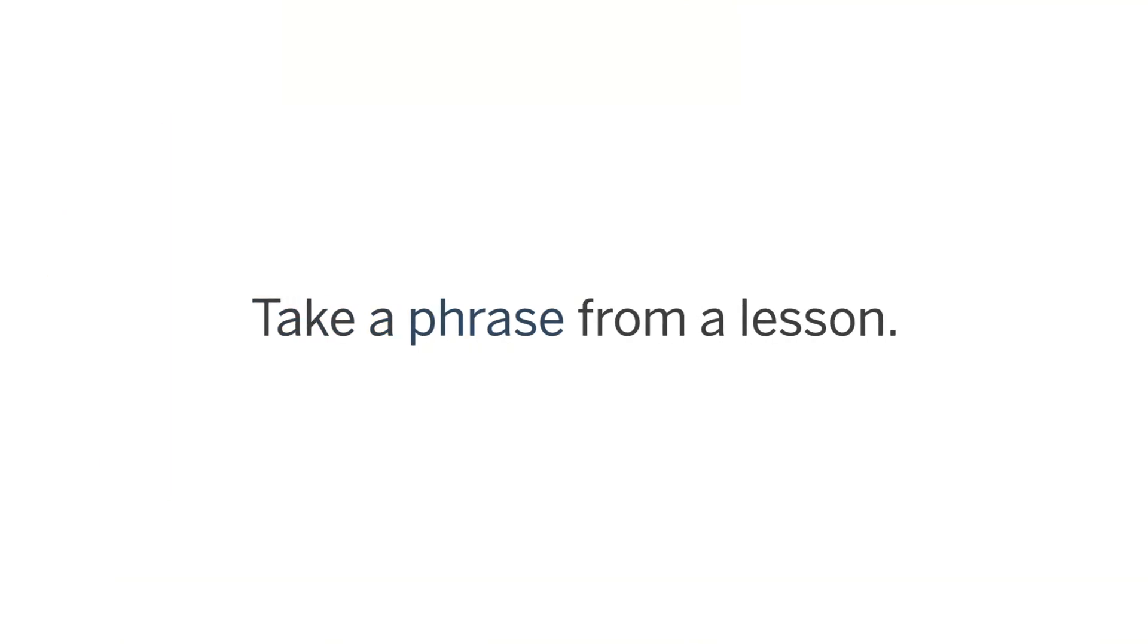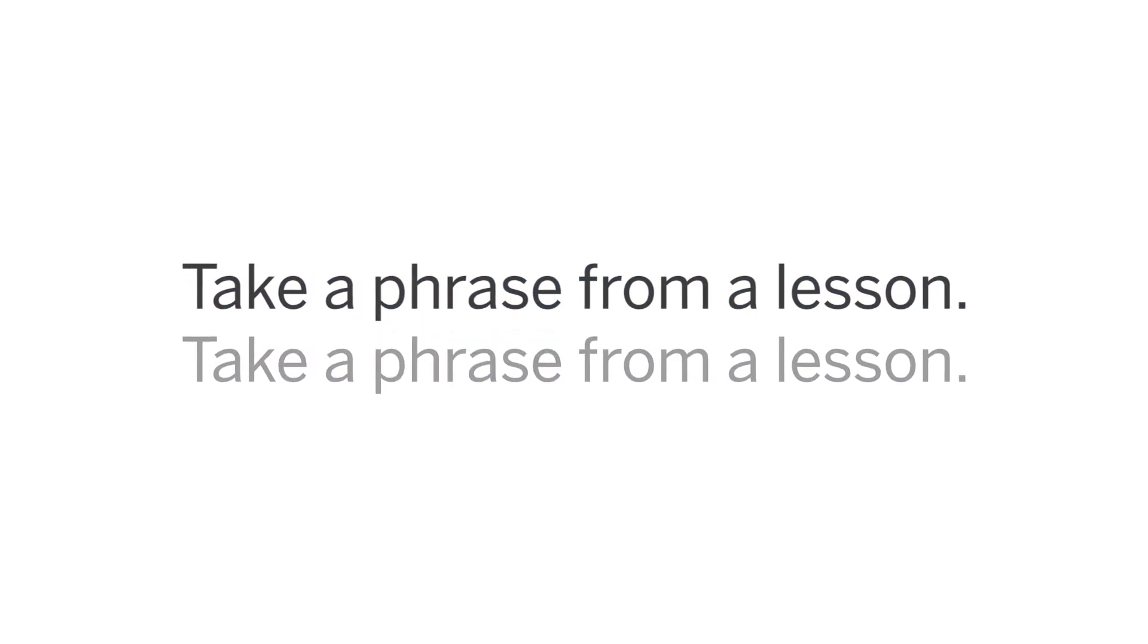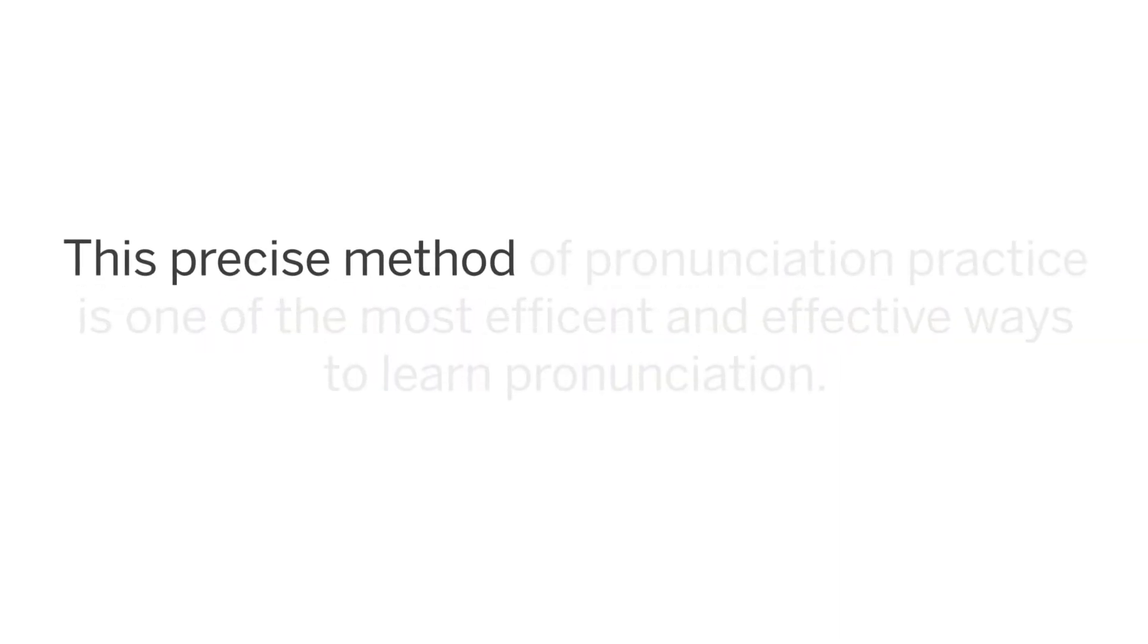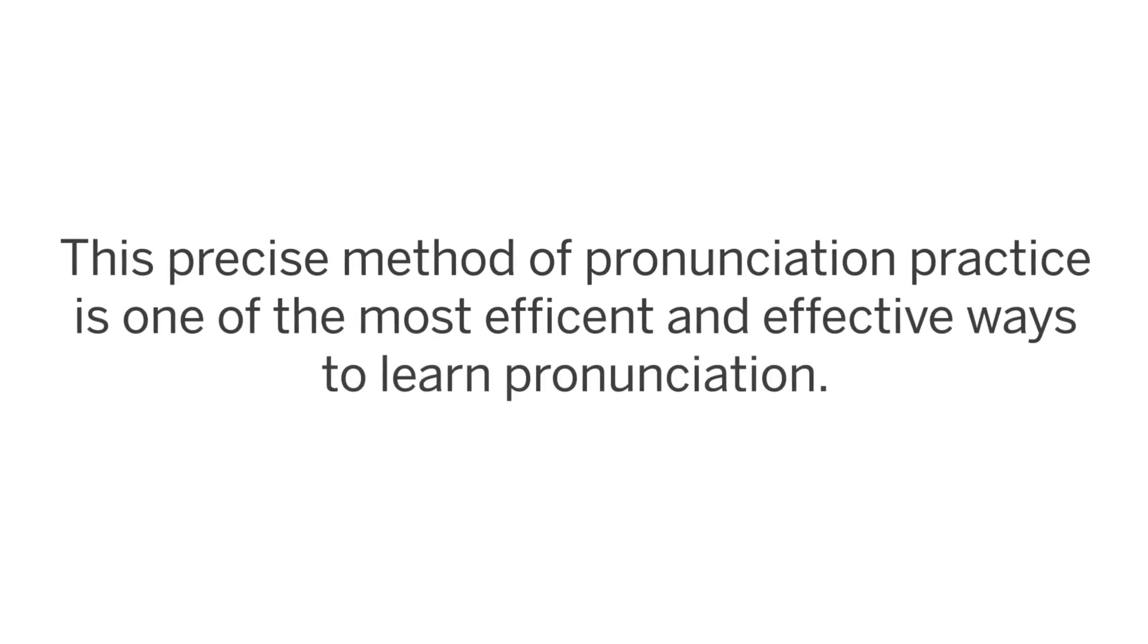Once you get the letters down, start listening to native audio and compare your pronunciation to the native speakers. Our language learning program's playback feature is a great way to accomplish this. Take a phrase from a lesson and start by practicing the individual words, playing the audio back at a slower speed and then again at a regular speed. After comparing your speech to the audio, combine the words to make complete phrases, imitating the intonation of the native speakers. This precise method of pronunciation practice is one of the most efficient and effective ways to learn pronunciation.